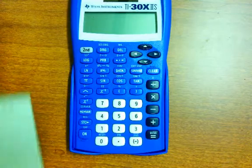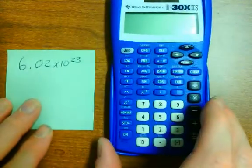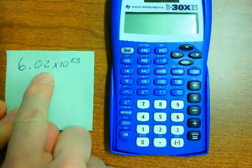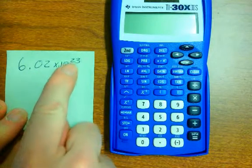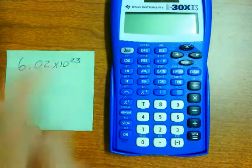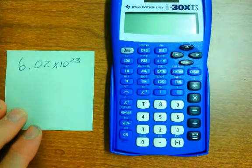For instance, if you're going to write it by hand, you would write 6.02 times 10 to the 23rd. However, that's not how you do this on the calculator.